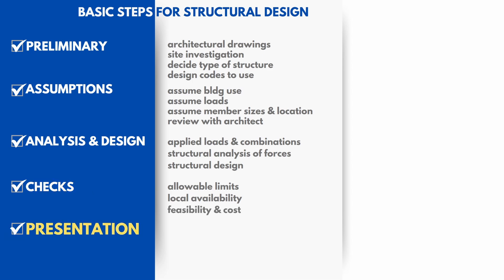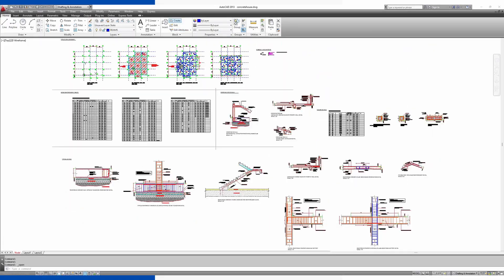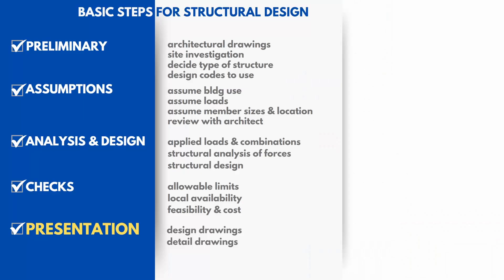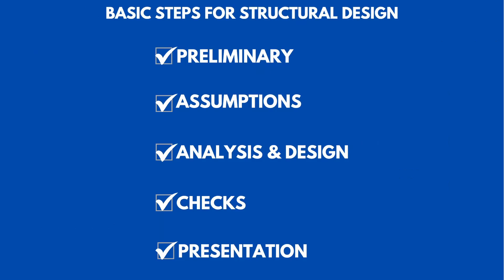Last, the actual design has to be put into design drawings and details for it to be able to go out for construction. To summarize, there are five stages in the design process of any structural design: preliminary, assumptions, analysis and design, checks, and presentation.